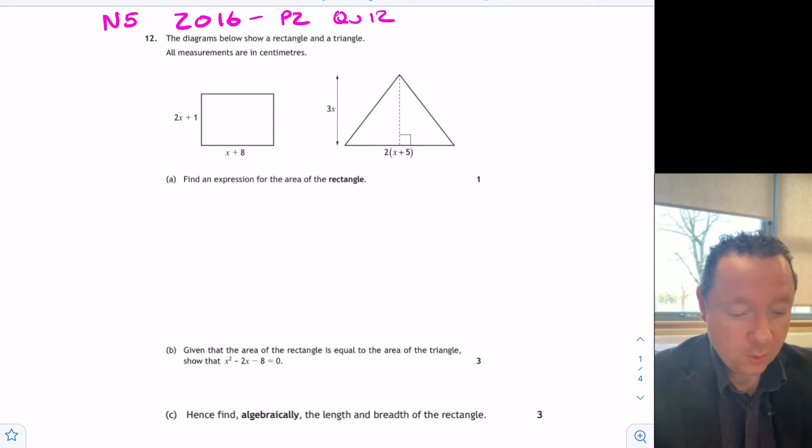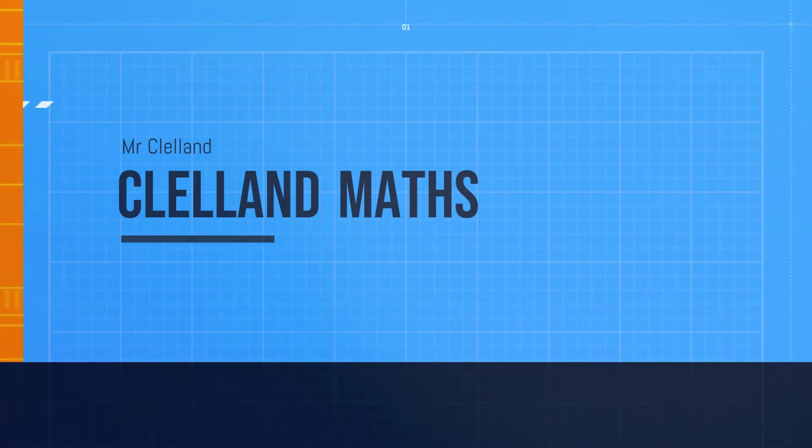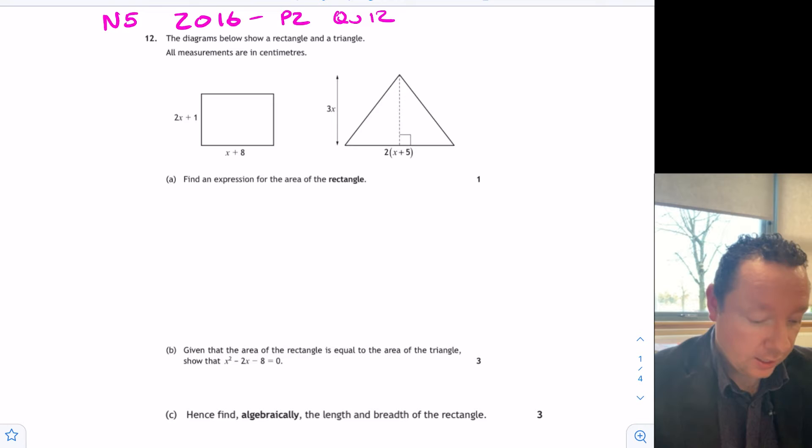So a good few years ago, but quite a common type of question to come up. And it says, the diagrams below show a rectangle and triangle. All measurements are in centimeters. Find an expression for the area of the rectangle for one mark.